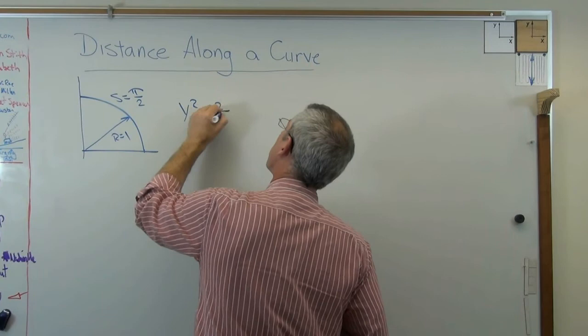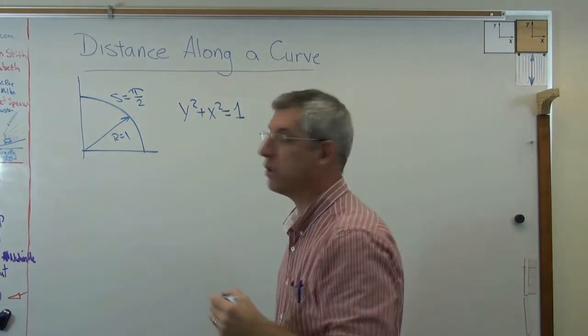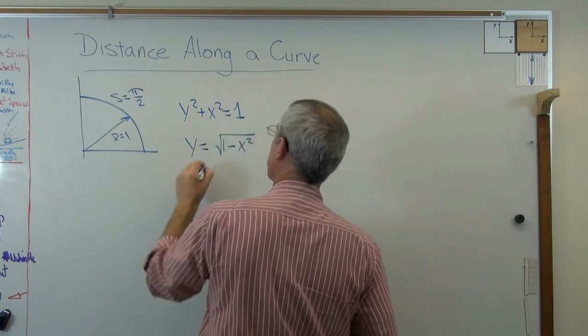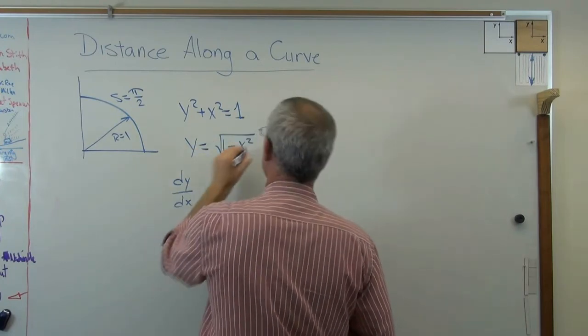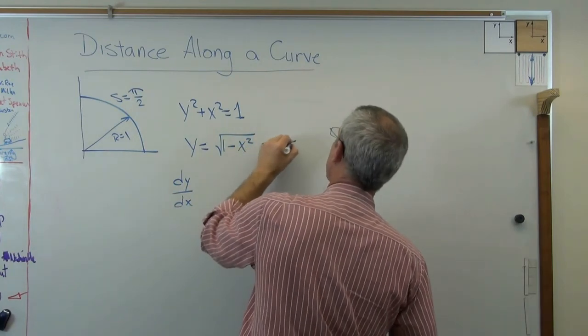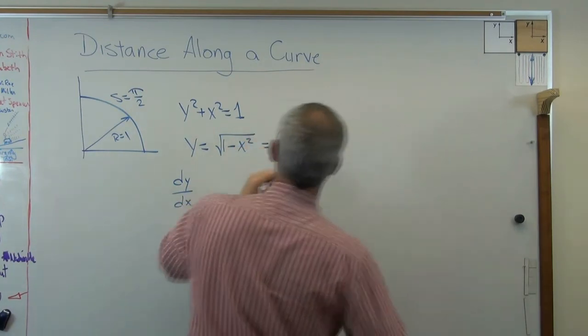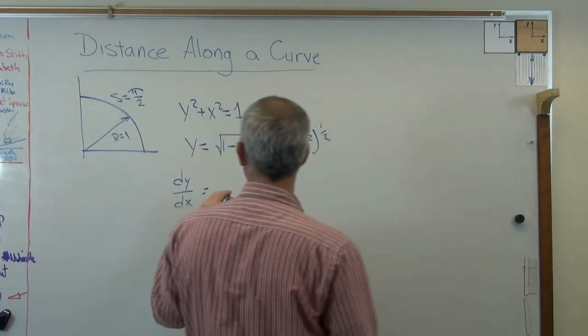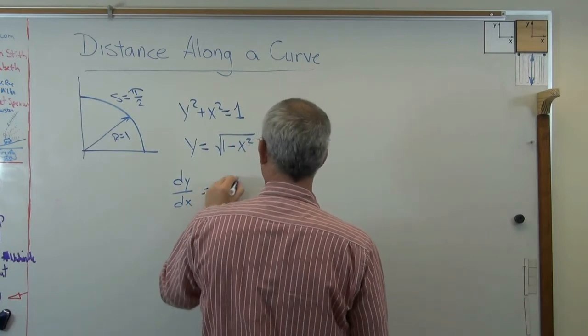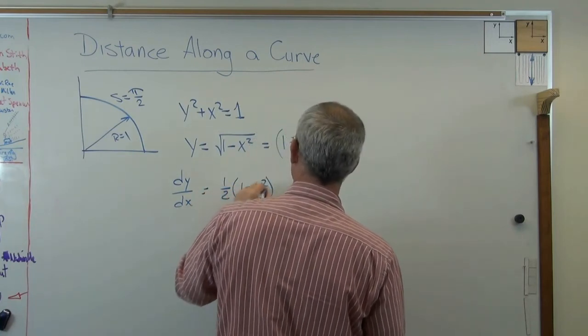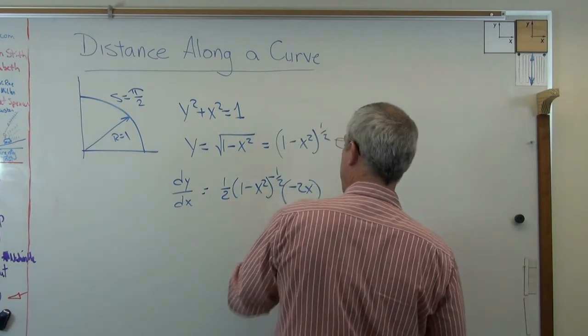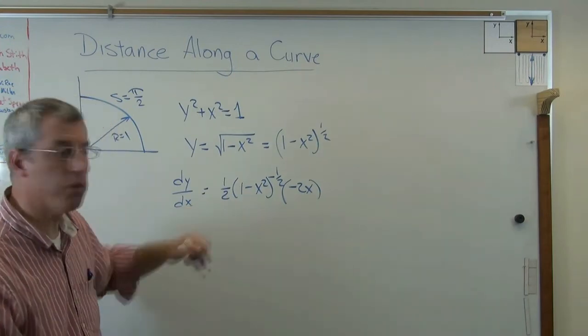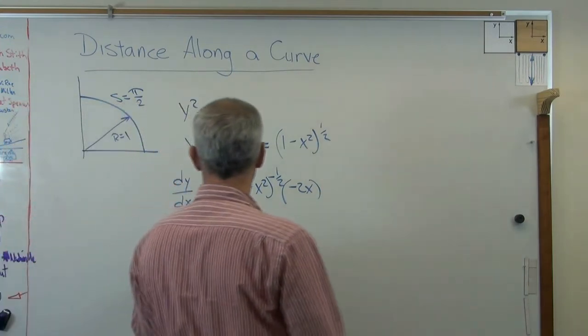y squared plus x squared equals 1 is the equation of the circle. So let's see. y must be 1 minus x squared, square root, and dy dx. By the way, that's also 1 minus x squared to the 1 half, right? I generally mess up a lot less when I do it that way. And so what I'm going to wind up with here is that's going to be 1 half. I'll get my head out of your way here in a second.